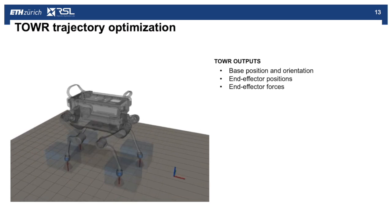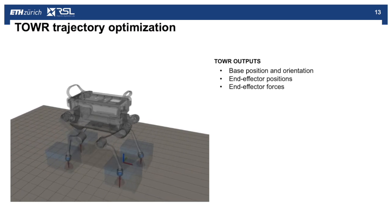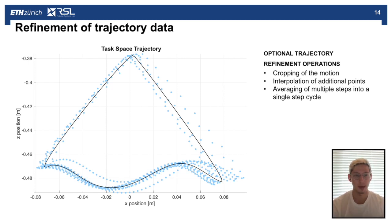Running TOWR, we get as outputs the end effector and the center of mass position as well as the end effector forces. Our next step is to import this data into the Vitruvio framework and to first refine the trajectory data. We obtain the motion of the end effector relative to the point where the leg is attached, and we can optionally crop the motion so that we consider only a given time frame within that full motion. We can also interpolate additional points in the trajectory and we can average multiple steps into a single step cycle.